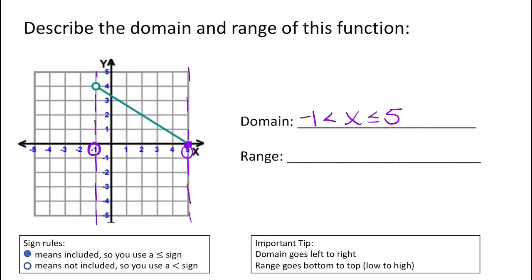Now let's describe the range, going bottom to top. I draw a line at the bottom value and one at the top value. The top upper value is 4, and the bottom value is on the x-axis, which is basically y equals 0. So the range goes from 0 — with a filled-in circle, so less than or equal to — then y, then less than 4. You can verify you've drawn the lines correctly by checking that this box contains every single value in the function.